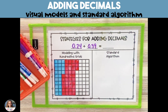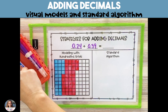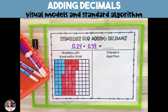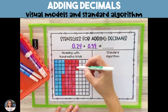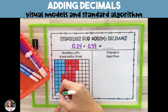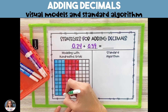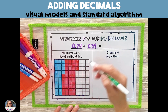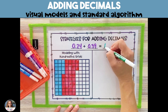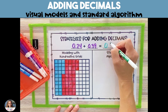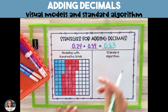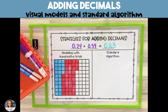Once we've shaded in both of our addends, we're going to look at the model and see how many hundredths are shaded in. There are six full columns, which is 60 hundredths, plus an additional three hundredths in the seventh column, for a total of 63 hundredths.